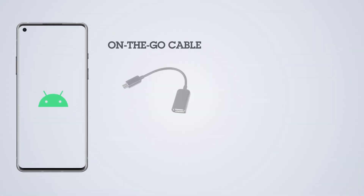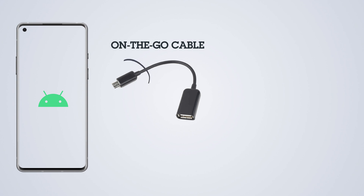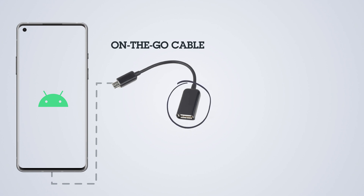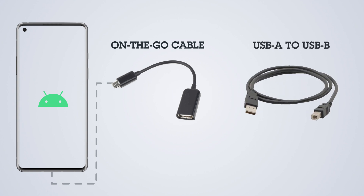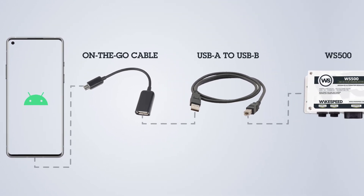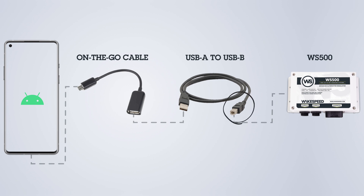The Android application allows you to use what's known as an on-the-go cable. You have one end that connects into the tablet — pick the connector that's appropriate for your device. The other end is a standard USB Type-A socket like you find on many computers. You'll also need a USB cable. The USB cable has two ends: one end connects into the OTG cable, and the other end connects into the WakeSpeed regulator. Most WakeSpeed regulators you get today will use this type of connection, called a Type-B, most commonly used on printers.